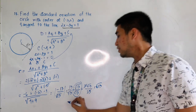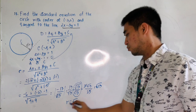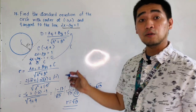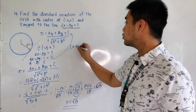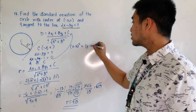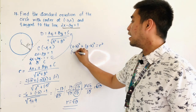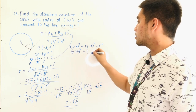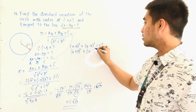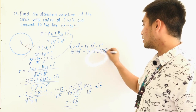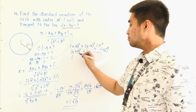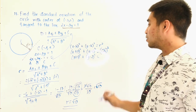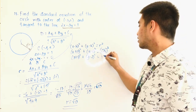Therefore, the square root of 13 is our radius. Now we write the standard equation: x minus h quantity squared plus y minus k quantity squared equals r squared. With center negative 3, positive 2 and radius square root of 13, that becomes x plus 3 quantity squared plus y minus 2 quantity squared equals 13.